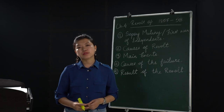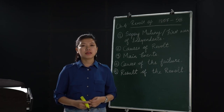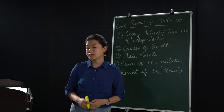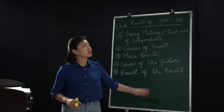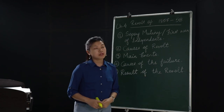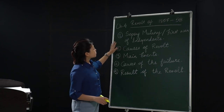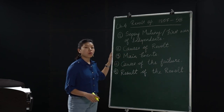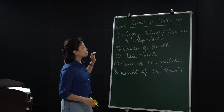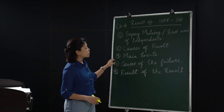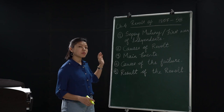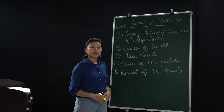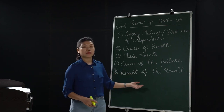Hello there, students. Welcome to your social science class. Today we are going to take chapter 4, which you will find on page number 31 in your textbook. The topic is The Revolt of 1857. The subtopics we will cover today are: Sepoy Mutiny, also known as the First War of Independence; Causes of Revolt; the main events during 1857 and 1858; Causes of Failure; and the results of the Revolt.